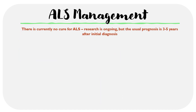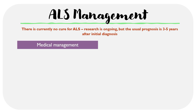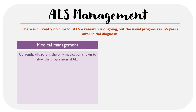For treatment options of ALS, there is currently no cure for the condition and the usual prognosis is around three to five years after the initial diagnosis. However, there are some management options which can help improve the lives of patients. One drug called riluzole is the only medication shown to slow the progression of ALS so far. Glutamate is one of the main neurotransmitters involved in the signaling of motor neurons, and patients with ALS often have higher levels of glutamate than normal.